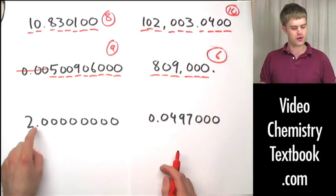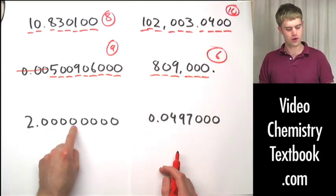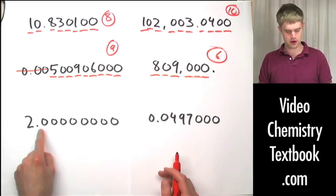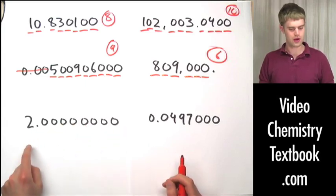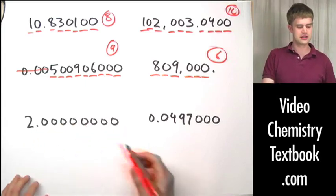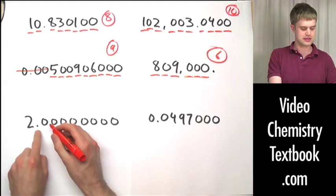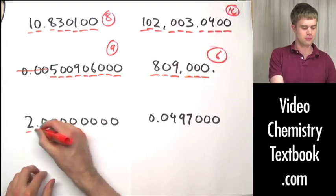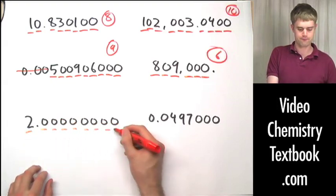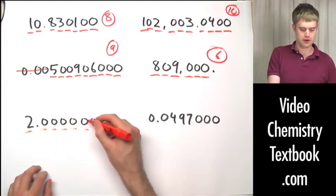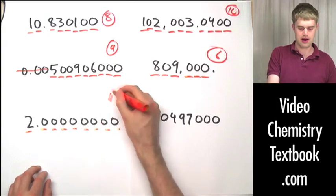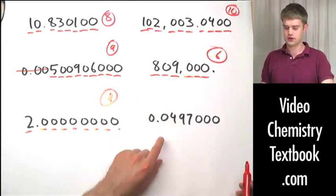For this number, we have two non-zero significant digits with eight zeros to the right. They are definitely significant because there is a decimal point in the number. Nine total significant figures here.